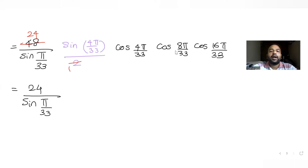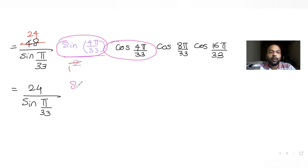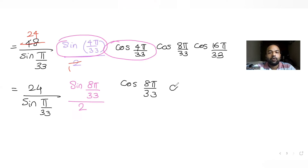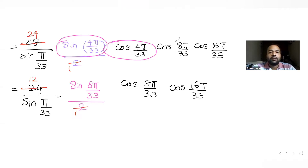Again applying sin(θ)·cos(θ) = sin(2θ)/2 to sin(4π/33)·cos(4π/33) = sin(8π/33)/2, with cos(8π/33)·cos(16π/33) remaining. Cancelling 2 from 24 leaves us with 12/sin(π/33).